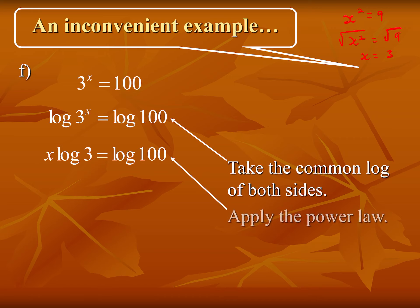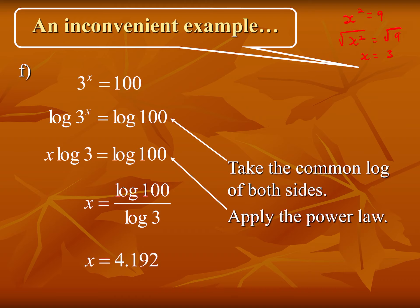Now just isolate x — divide both sides by log 3. You get x = log 100 ÷ log 3. Type that into your calculator: log(100) divided by log(3) gives approximately 4.192. Try it now so you know where those buttons are. This gives us a method to solve any exponential equation: isolate the exponential part, take logs of both sides, and log law 3 does the rest.